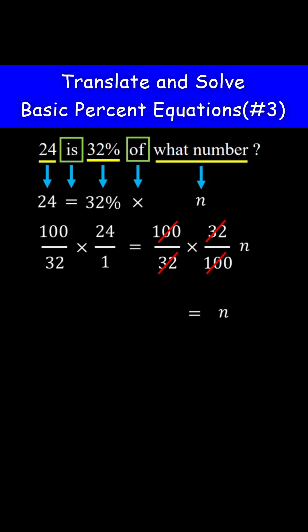On the left side of the equation, before you multiply, simplify if possible using cancellation. 100 can be factored as 4 times 25. 32 can be factored as 4 times 8. 24 can be factored as 3 times 8.